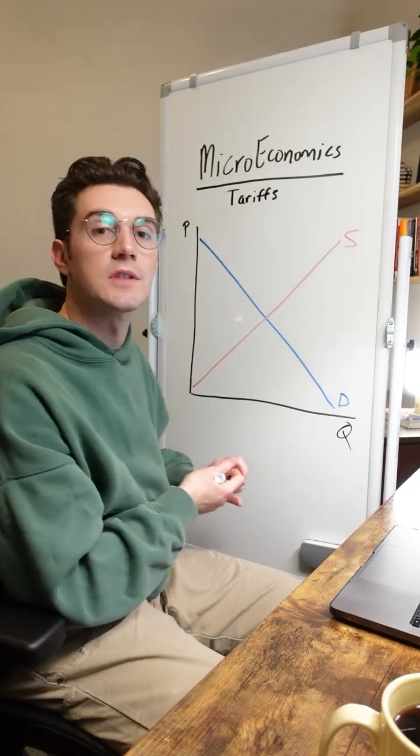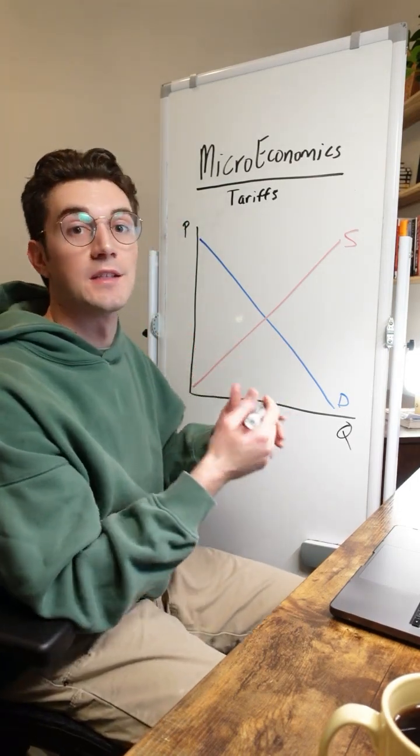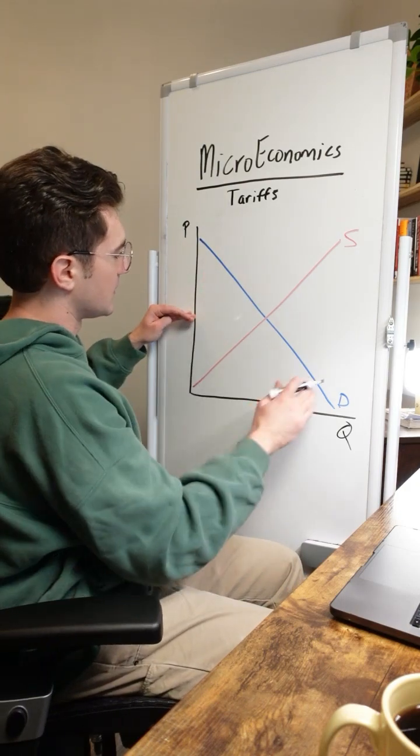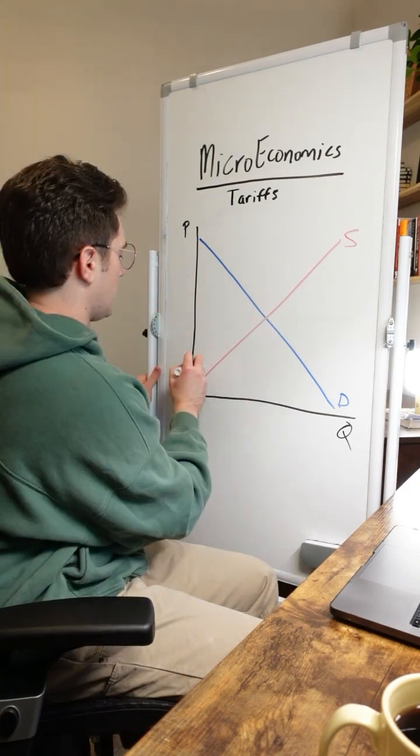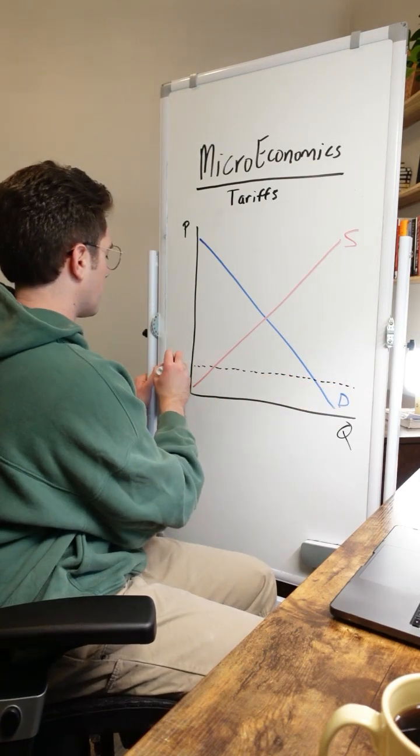With that said, the first thing to understand is that a tariff is not going to get implemented in a domestic only market. This economy, this country right here, is not going to be operating at this equilibrium price at the intersection. We're going to imagine for the sake of this example that they're actually operating at this world price, PW.